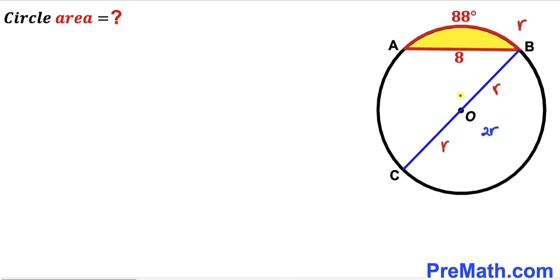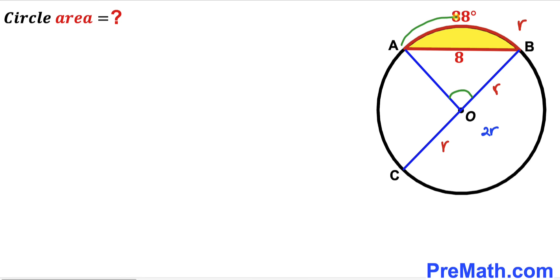In this next step I am going to connect this center O with this point A. So we can see OA is our radius as well. Now let's observe that this angle AOB is going to be equal to this arc AB angle. We know our arc AB angle is 88 degrees, so therefore this angle AOB turns out to be 88 degrees — the angle at the center is 88 degrees.